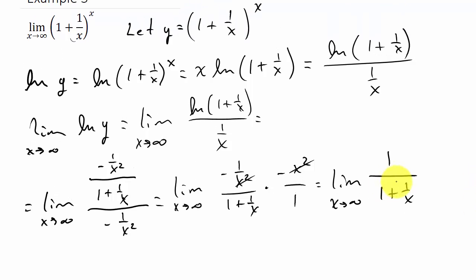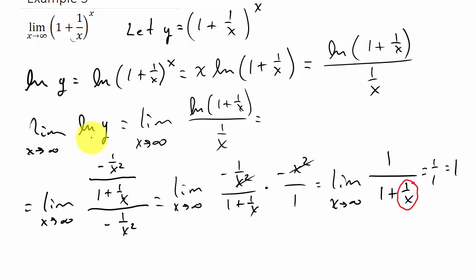Taking the limit as X goes to infinity, the term 1 over X goes to 0, so I'm left with 1 over 1, which equals 1. So the limit of the natural log of Y as X goes to infinity equals 1.